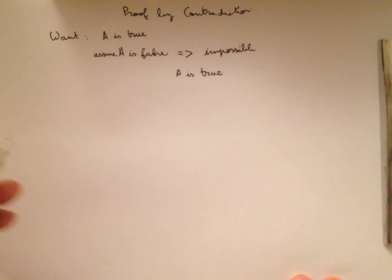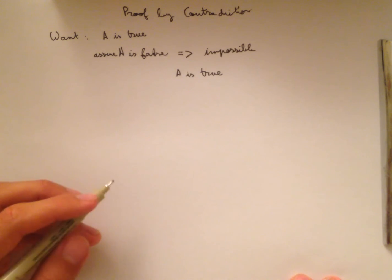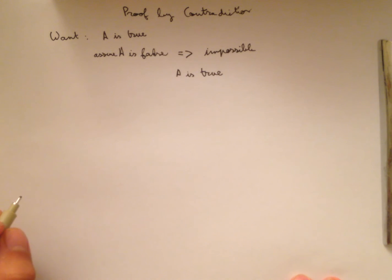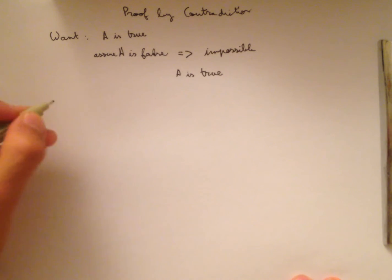Now, what is this impossible thing? Well, in math, our statements are well defined so that they cannot be both true and false at the same time. So our impossible thing is to find a statement Q such that Q is true and Q is false.